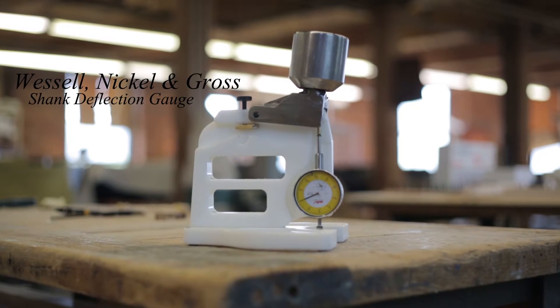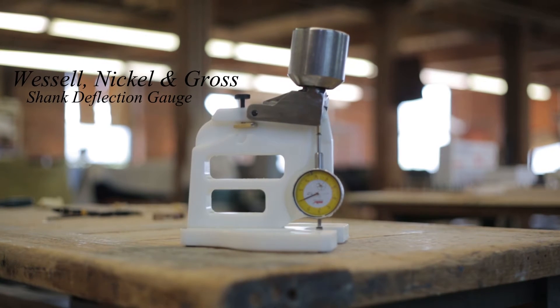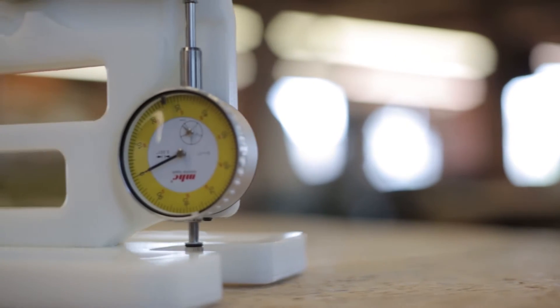This is the Wessel, Knickle & Gross shank deflection gauge. It is the first consumer device to accurately measure the strength or deflection of a shank.